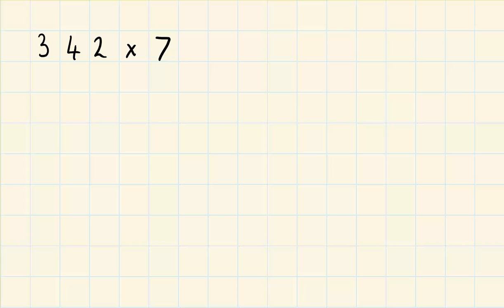Right, I'm going to show you how to use the ladder method to do 342 multiplied by 7. So the first thing we have to do is rewrite our calculation in column format. That's 342 multiplied by 7.